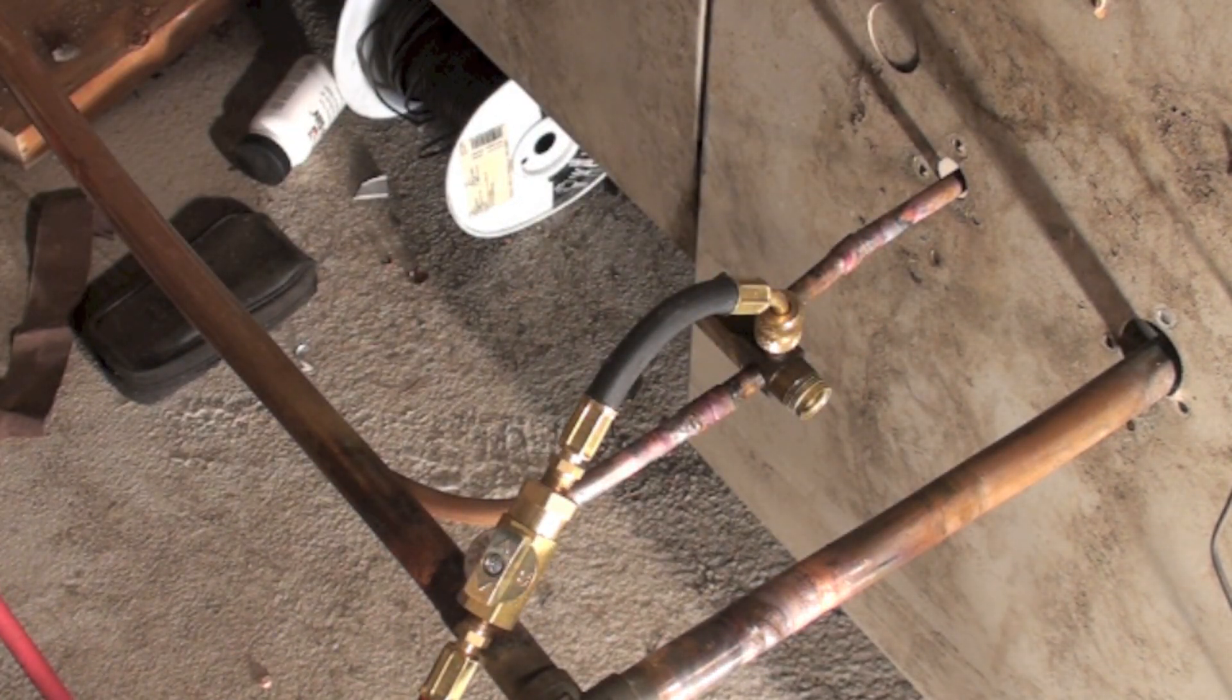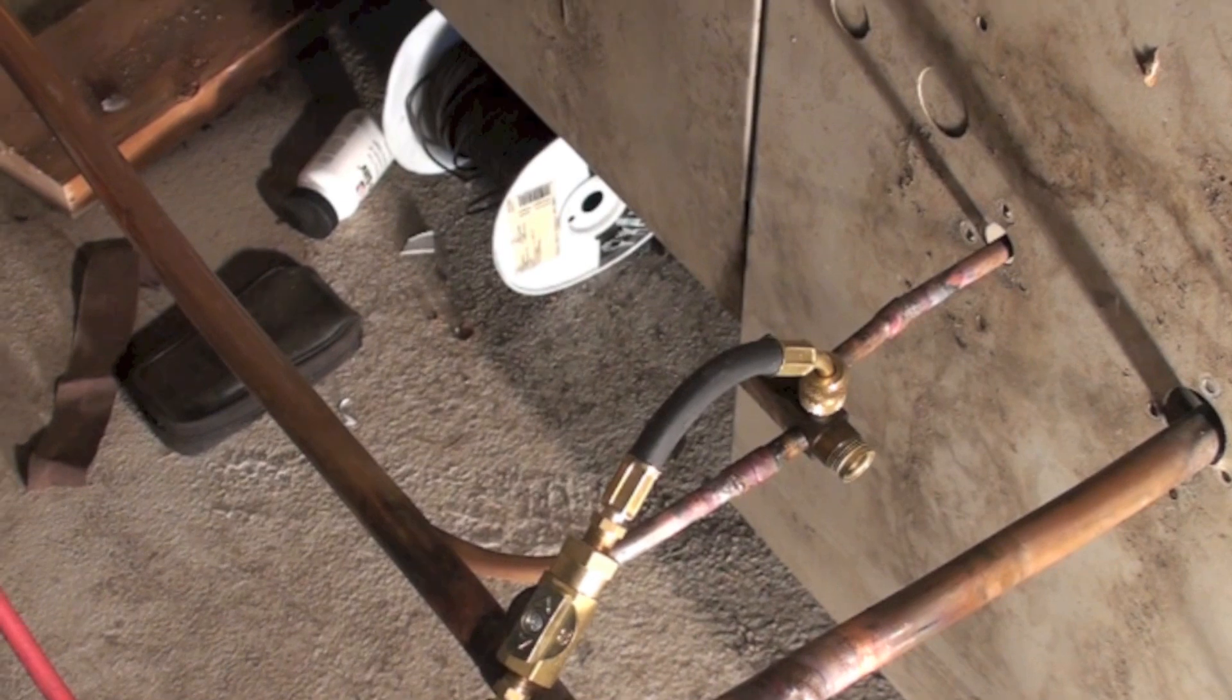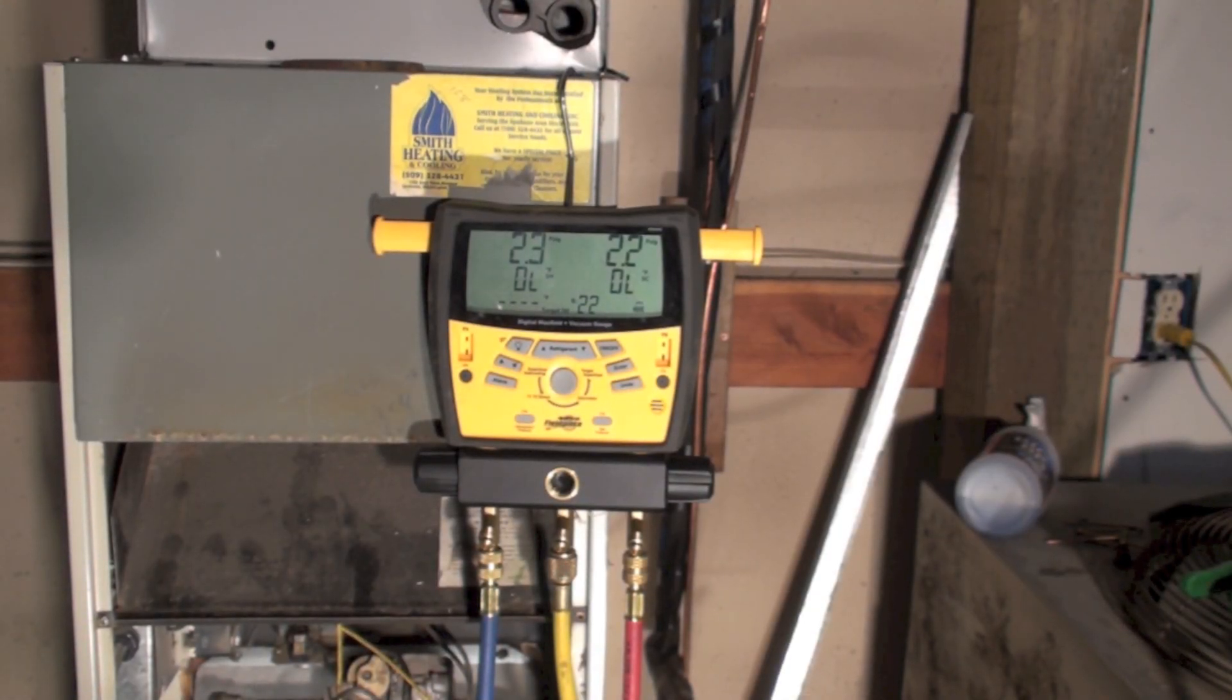My hose back on. Now, at this point, the hose has got air in it again. Now, let's look at our gauge set. Okay, we still have positive pressure in there.